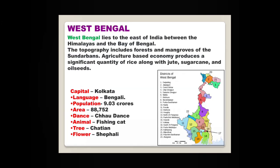Last but not the least — West Bengal. West Bengal lies to the east of India between the Himalayas and the Bay of Bengal. The topography includes forests and mangroves of the Sundarbans. The agriculture-based economy produces a significant quantity of rice along with jute, sugarcane and oilseeds. The capital of West Bengal is Kolkata. The language spoken here is mostly Bengali. The famous dance form of West Bengal is Chhau dance.